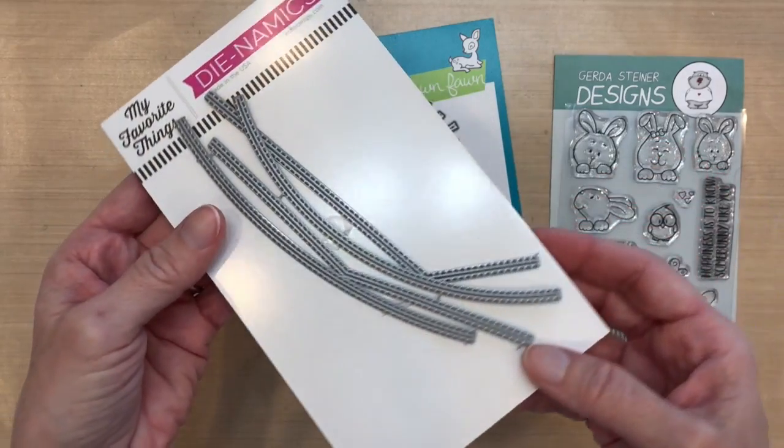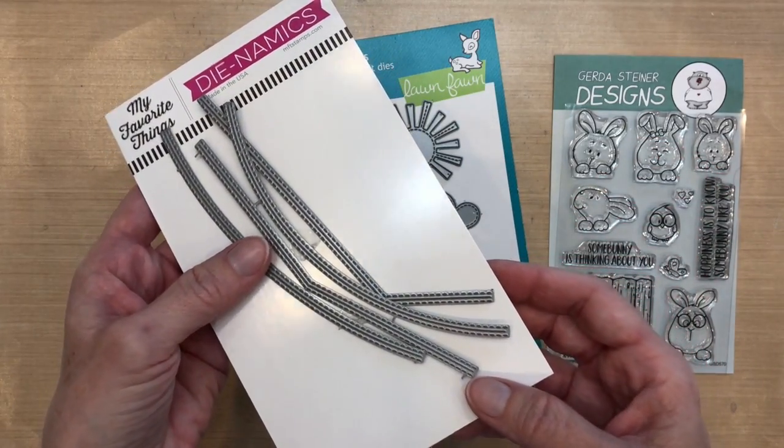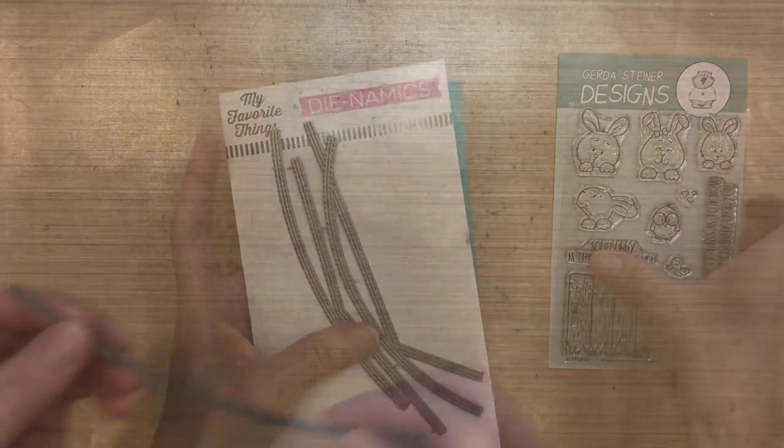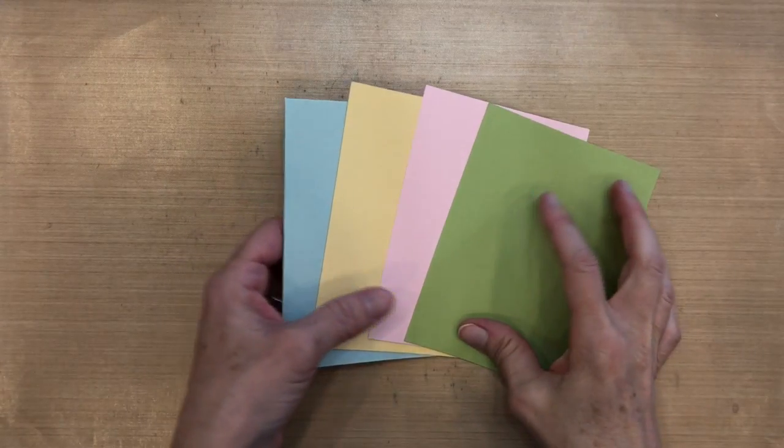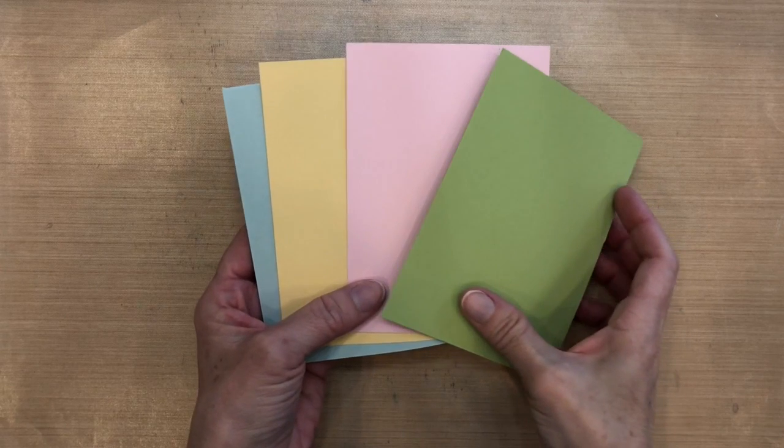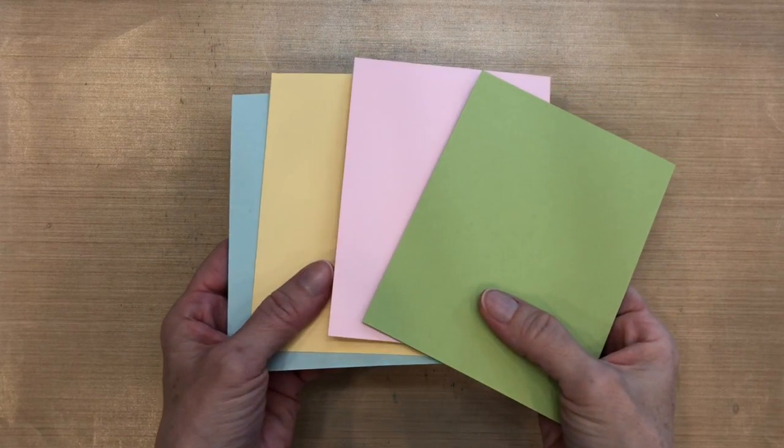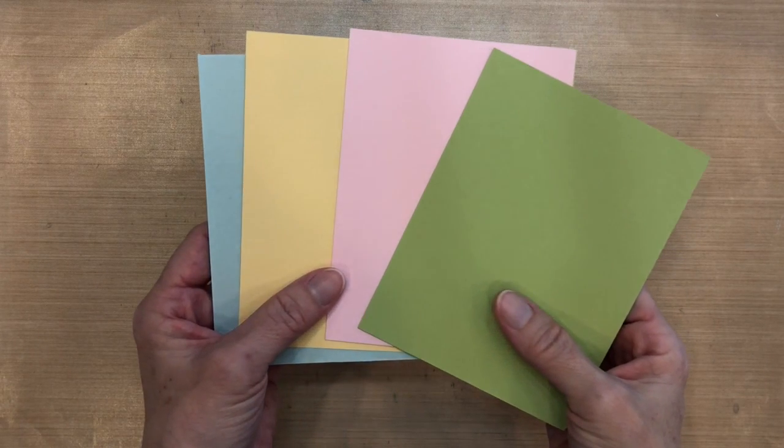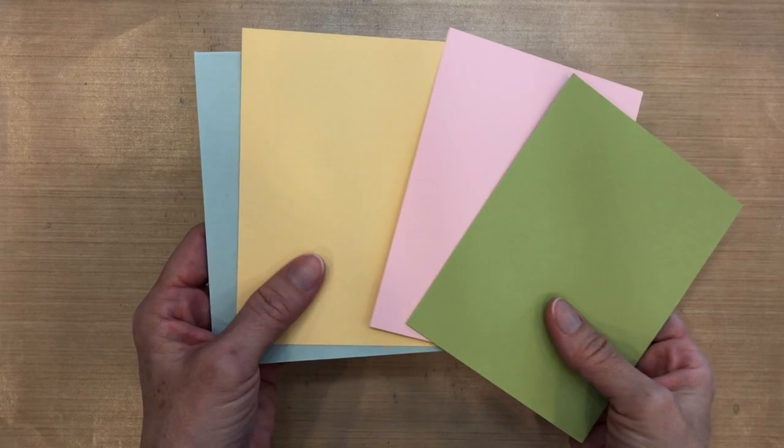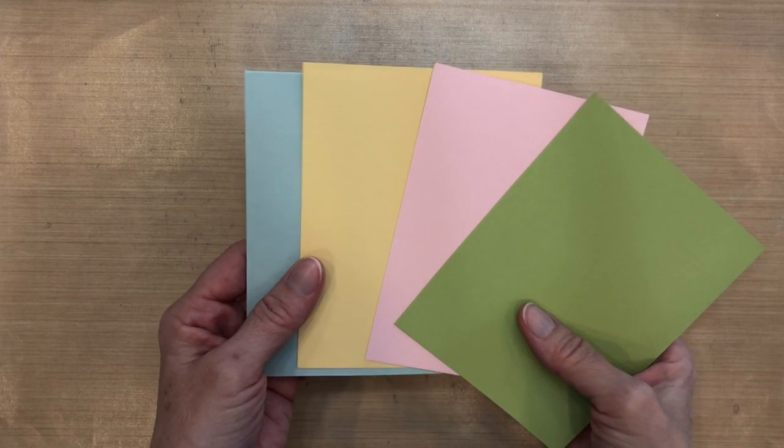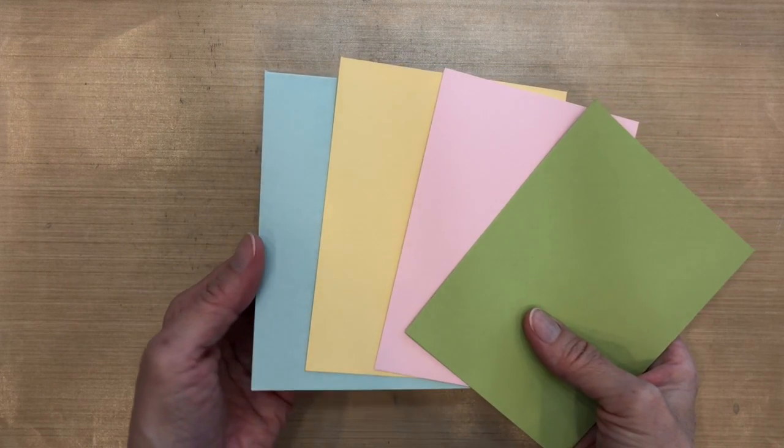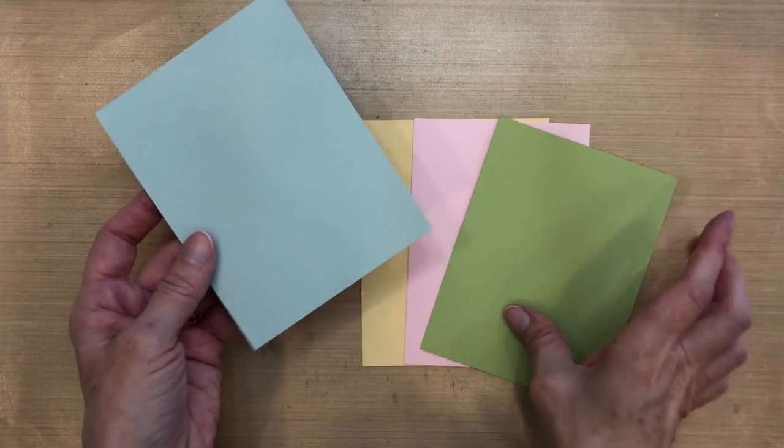And finally this Stitched Basic Edges by My Favorite Things. There are two curves in this set. I'm using the one that's less curved. You can see there's stitching on both sides. I actually don't have very much pastel paper, so I had to pull two retired colors from Stampin' Up. I have Soft Sky, Barely Banana, Pink Pirouette which is the current one, and then Certainly Celery which is an old one.